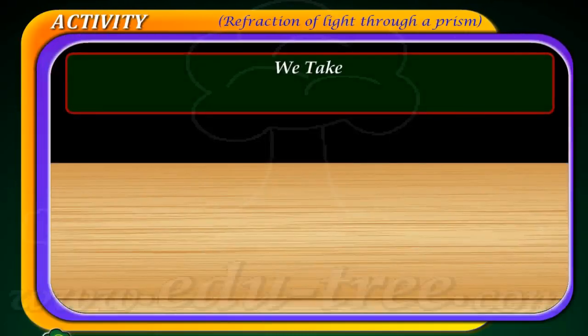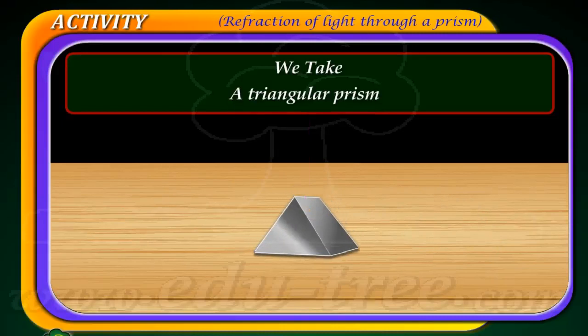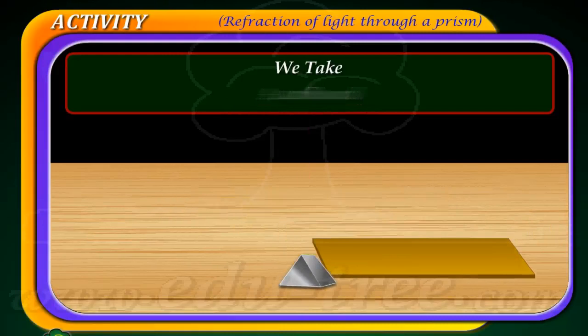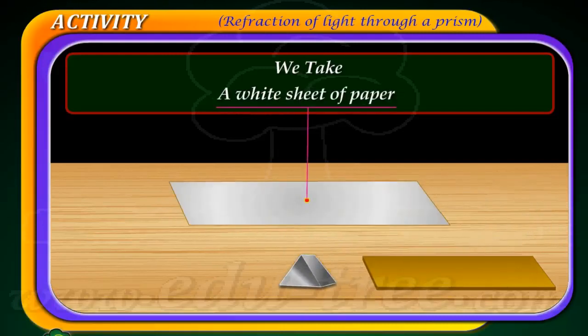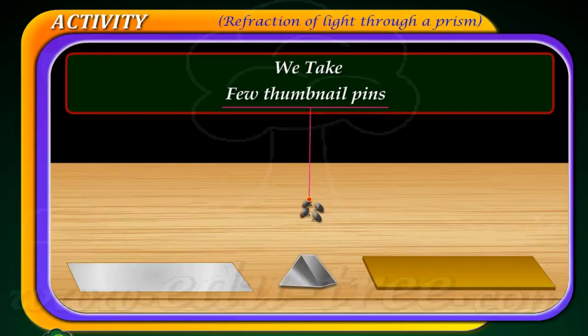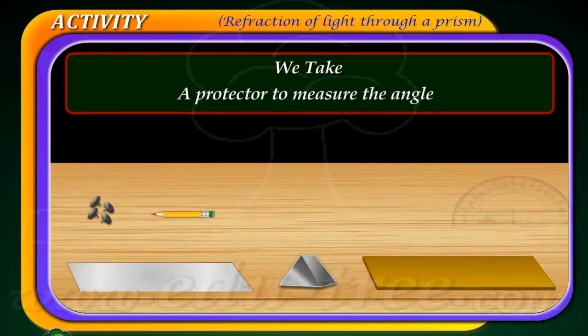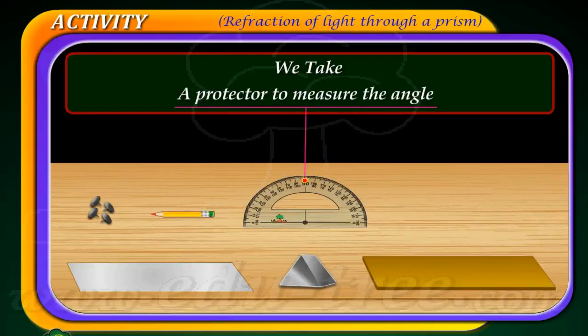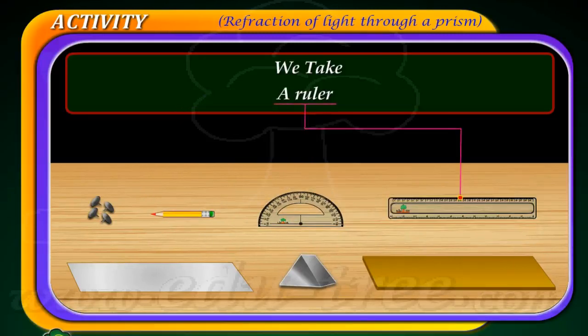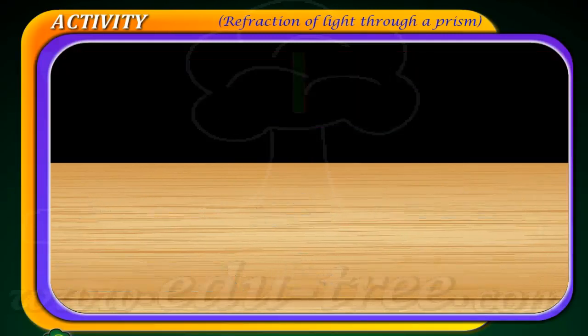We take a triangular prism, a cardboard, a white sheet of paper, few thumbnail pins, a pencil, a protractor to measure the angle, and a ruler.